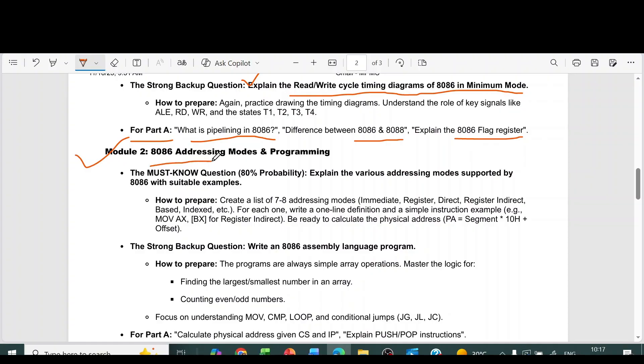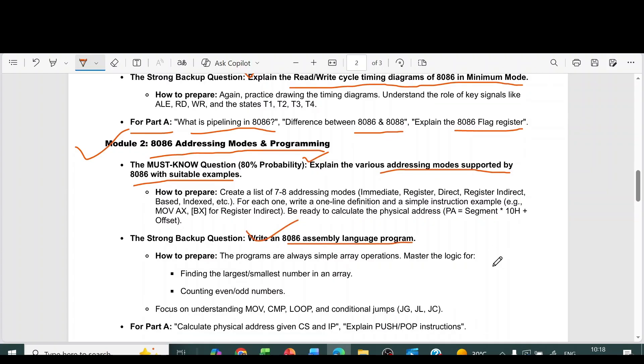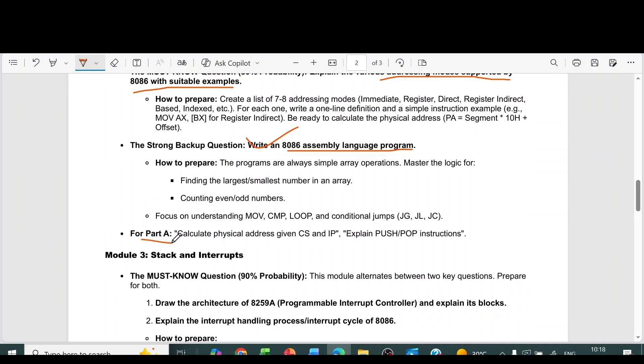Coming to module 2, 8086 addressing modes and programming. The first question is explain the various addressing modes supported by 8086 with suitable examples. Second question is write an 8086 assembly language program. Part A questions are calculate physical address given CS and IP, explain push or pop instructions.